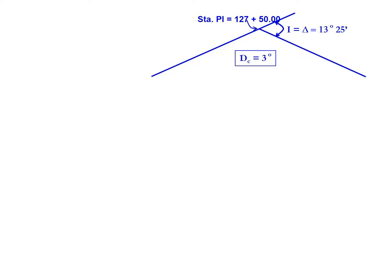So with this information we can start working through the components that we need. We can calculate the radius which is 18,000 over pi times our three degree curve, which gives us a radius of 1909.859 feet.